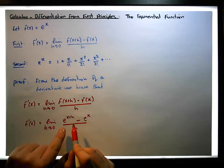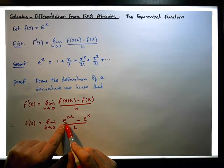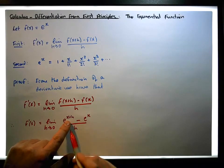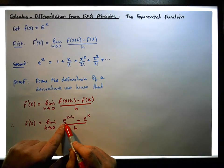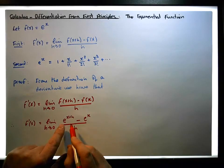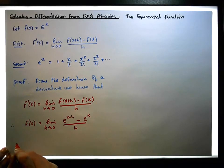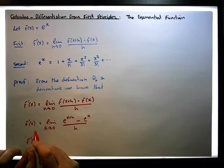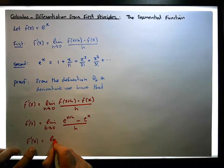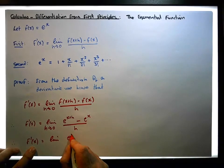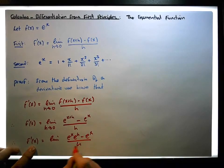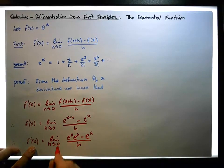Using the rules of exponents, e raised to the power of x plus h is the same as the product of e to the power of x times e to the power of h. So we can split this up based on one of our exponent rules. Therefore the first derivative of f of x is equal to the limit of e to the x times e to the h, minus e to the x, all over h, as h tends to zero.